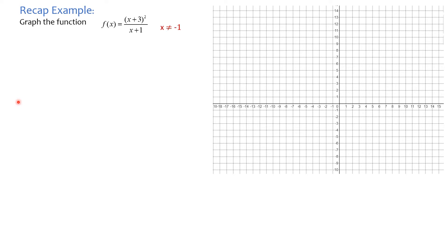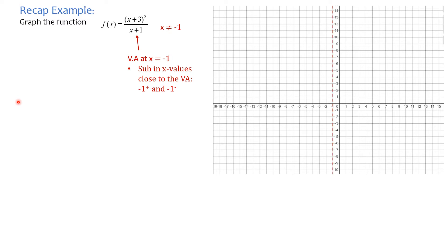Let's start with the restriction: x cannot equal negative 1. What does that mean on the graph? The denominator tells us about a vertical asymptote. We have a vertical asymptote at negative 1, and I've drawn it on the graph.